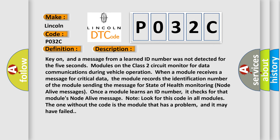Key on, and a message from a learned ID number was not detected for five seconds. Modules on a Class 2 circuit monitor for data communications during vehicle operation. When a module receives a message for critical data, the module records the identification number of the module sending the message for state of health monitoring node alive messages. Once a module learns an ID number, it checks for that module's node alive message. Look for this code in all modules. The one without the code is the module that has a problem, and it may have failed.